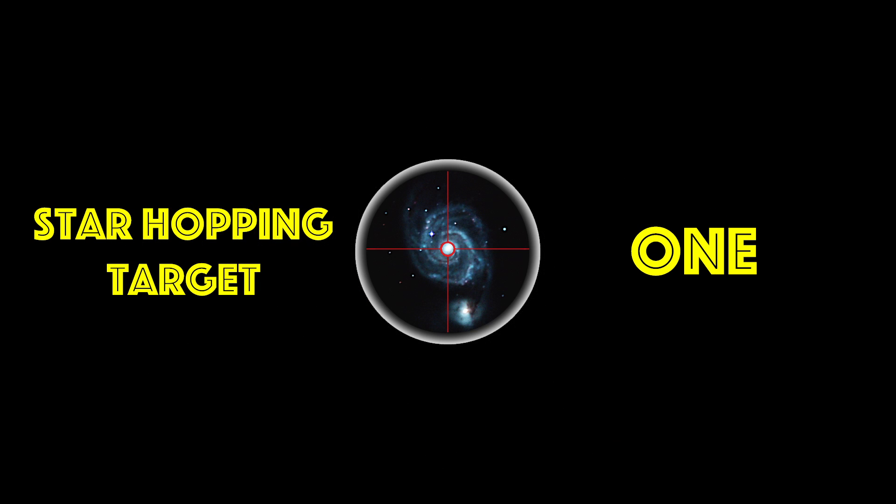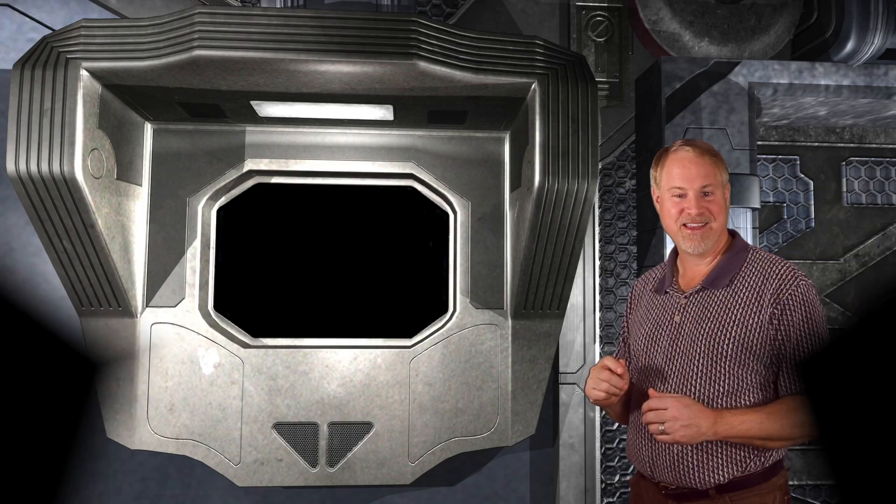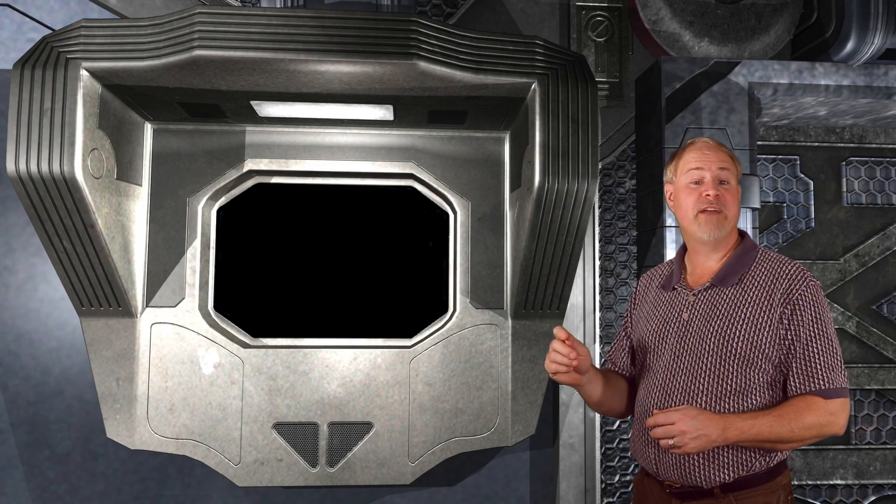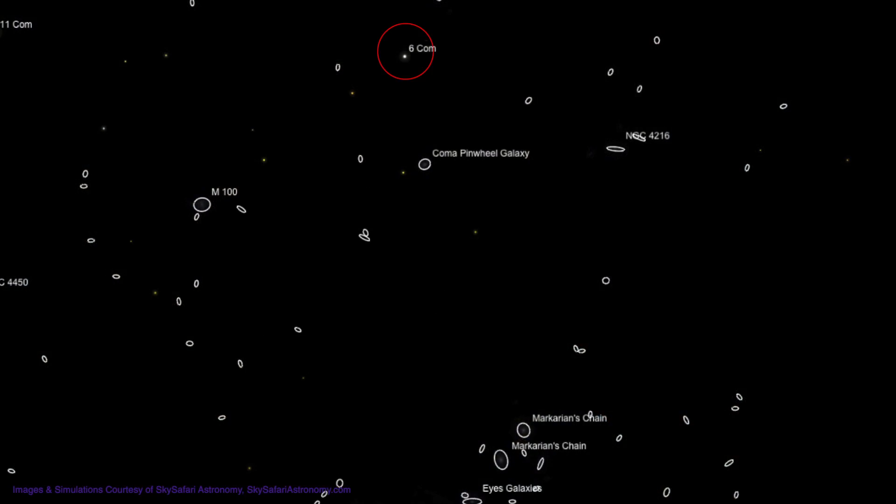Star Hopping Target Number 1. To locate M84, we have to make a couple hops to first a 6th magnitude star, and then a 7th magnitude star.